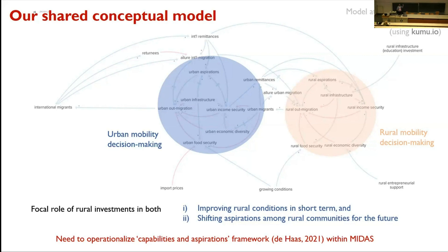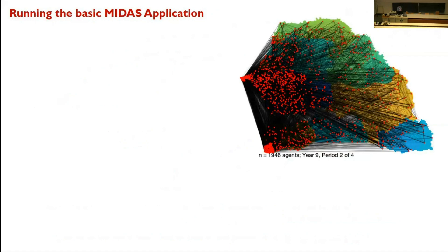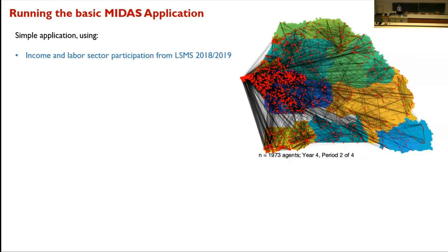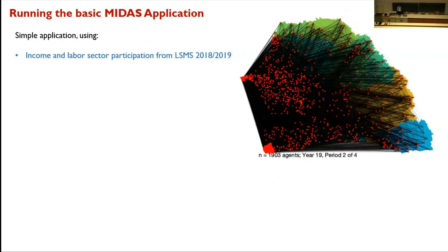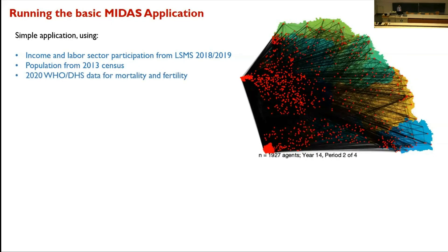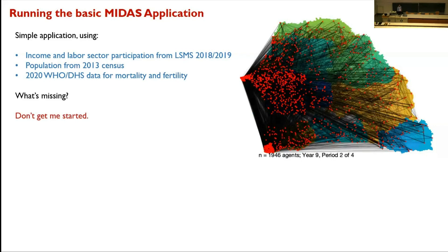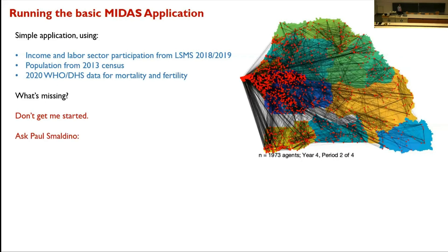Our experimental questions — looking at the tail and back leg of the conceptual model — focus on the impacts of investments in rural opportunities to shape rural conditions in the short term but also shift community aspirations for the future. This requires us to do a better job of integrating a capabilities and aspirations framework into MIDAS, comparing different portfolios of opportunity. I'm working with my postdoc Nick Shiket-Levy on putting things we can do now on a common computational footing with things we might be able to do in the future. We have an algorithm in development and a simple model up and running, using data on wages from the recent LSMS wave, movements from the 2013 census, and mortality and fertility data from the WHO.